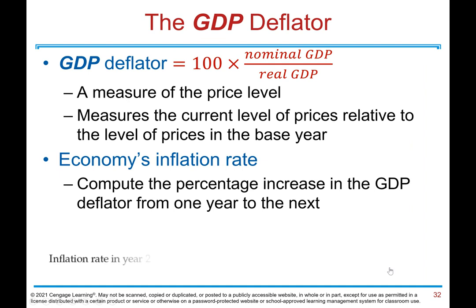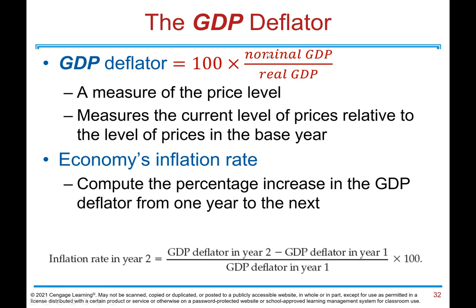The GDP deflator is calculated as the ratio of nominal GDP to real GDP, multiplied by 100. It is a measure of the price level — specifically, it measures the current level of prices relative to the level of prices in the base year. That is the economy's inflation rate. We compute the percentage increase in the GDP deflator from one year to the next: Inflation rate in year 2 = (GDP deflator year 2 − GDP deflator year 1) ÷ GDP deflator year 1 × 100.